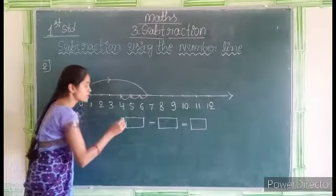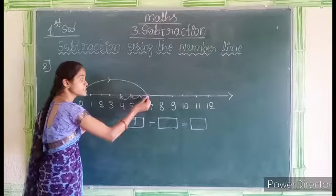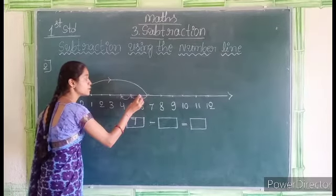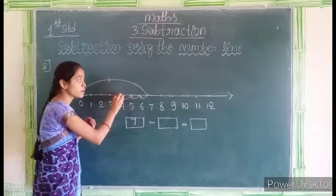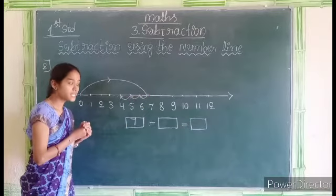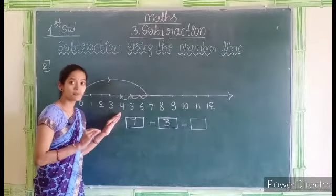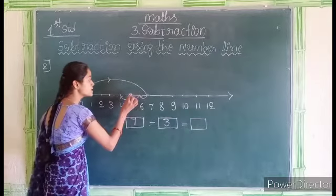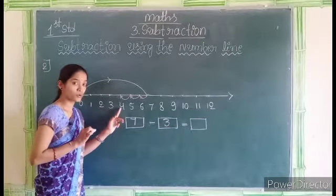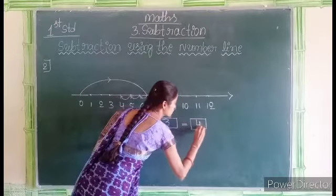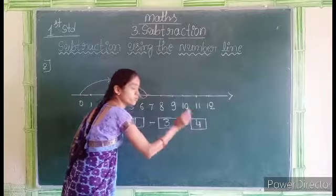7 is the first number. Then how many points did they count back from 7? Let us count: 1, 2, 3. They counted 3 points back from 7. So 3 is the second number. The point at which we stopped is the answer — here it is 4. So 4 is the answer. When we subtract 3 from 7, we get 4.